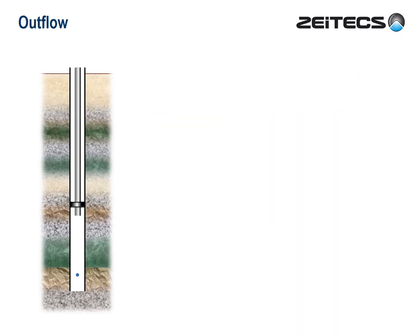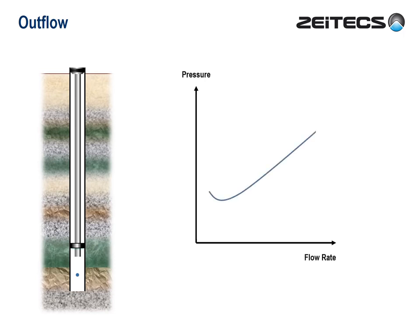So now let's complete the well and move on to outflow. Referring to the same imaginary point, a certain flowing bottom-hole pressure is required to drive the fluids to surface. This is called the outflow performance of the well system. At low pressures and rates, the fluids tend to misbehave, but otherwise, what we see here is another very simple relationship.